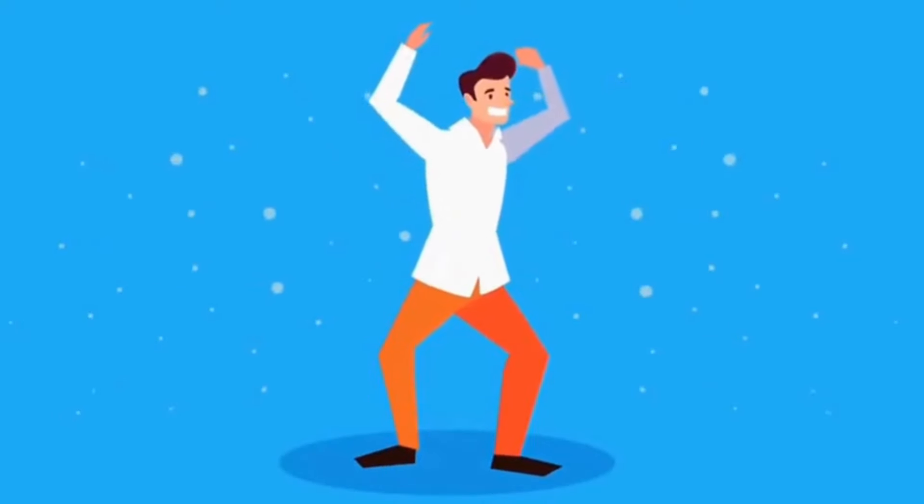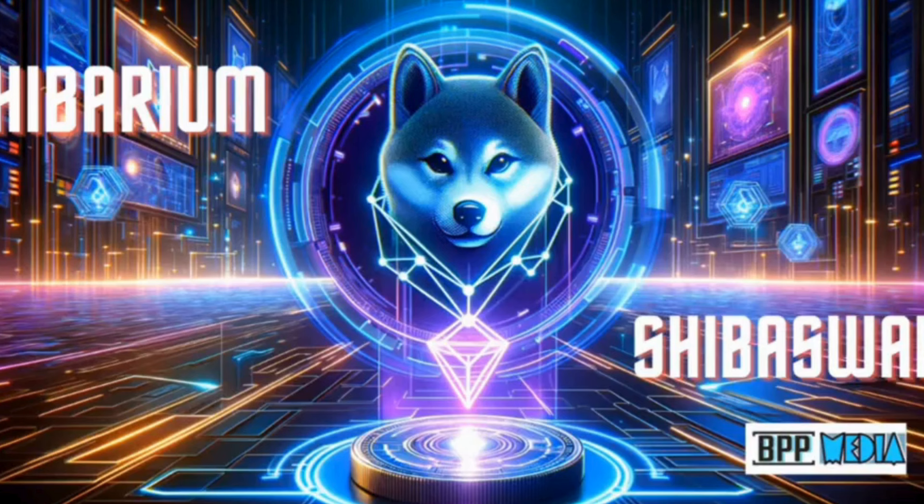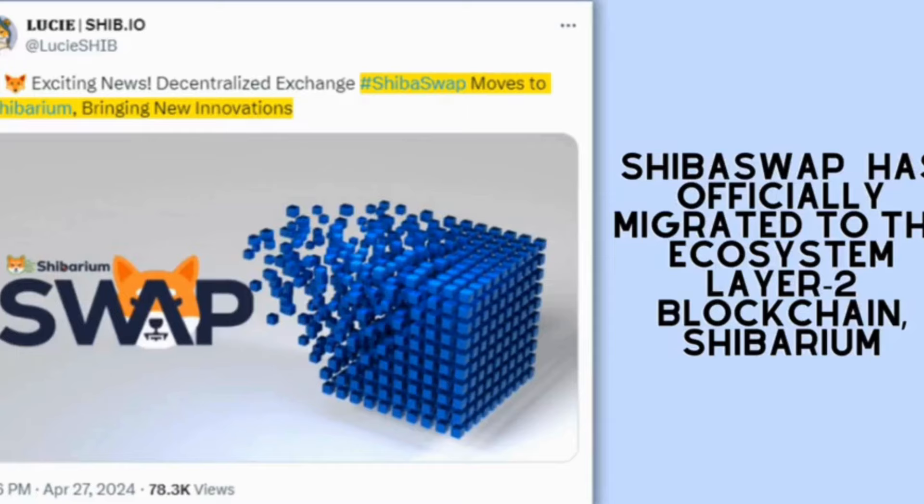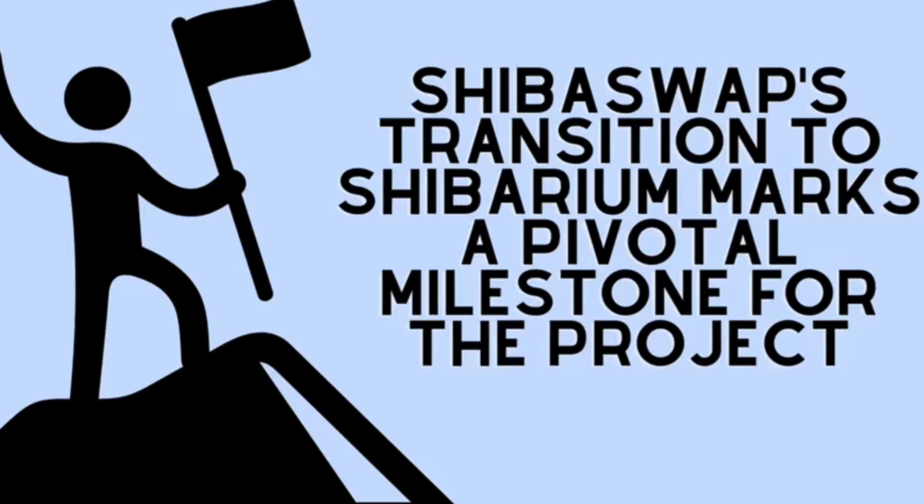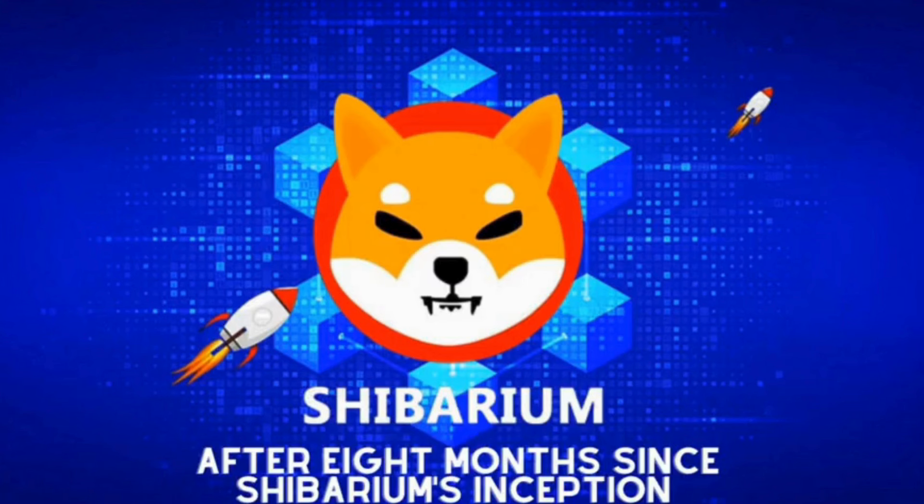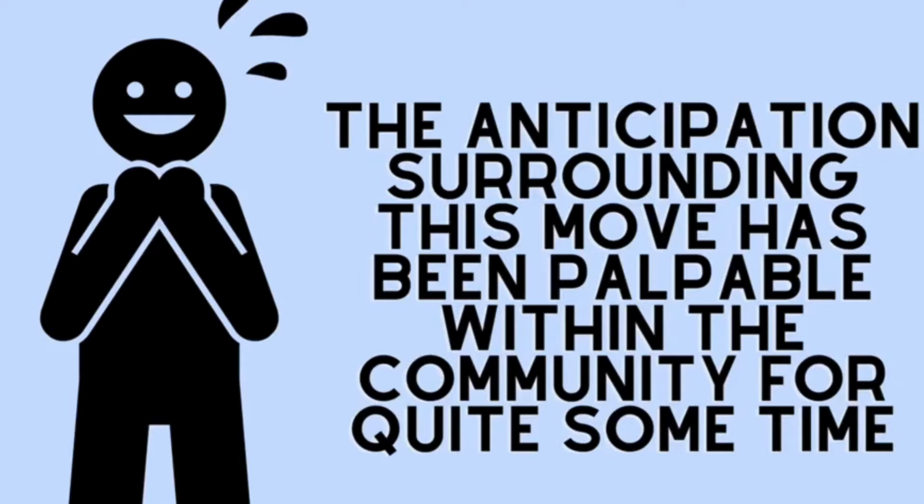The much-awaited moment has finally arrived. ShibaSwap, the renowned decentralized exchange catering to the Shiba Inu community, has officially migrated to the ecosystem layer 2 blockchain Shibarium. In a recent announcement, Lucy, a Shiba Inu content marketing specialist, unveiled this significant development. Previously exclusive to Ethereum, ShibaSwap's transition to Shibarium marks a pivotal milestone for the project. The Shiba Inu development team's confirmation of this migration comes after eight months since Shibarium's inception. The anticipation surrounding this move has been palpable within the community for quite some time.